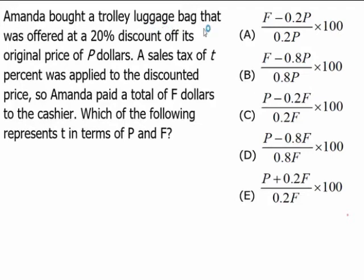Amanda bought a trolley luggage bag that was offered at 20% discount of its original price of P dollars. A sales tax of T% was applied to the discounted price, so Amanda paid a total of F dollars to the cashier. Which of the following represents T in terms of P and F?